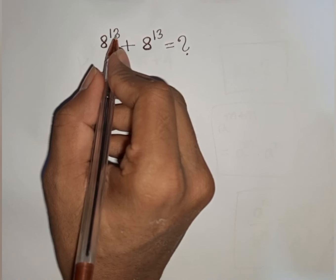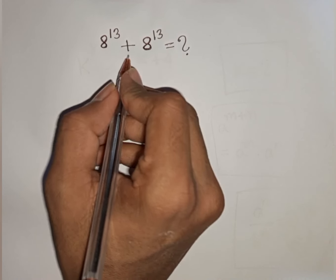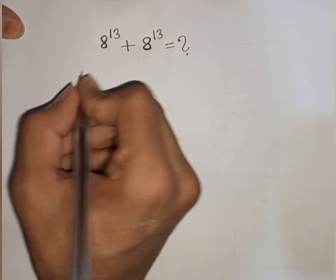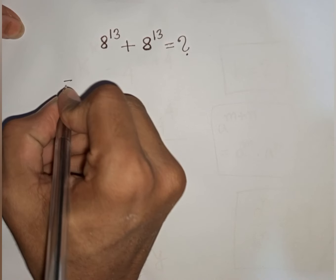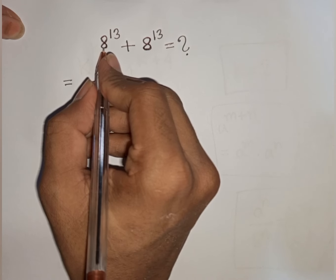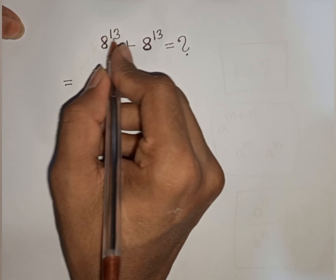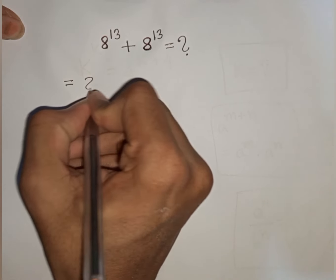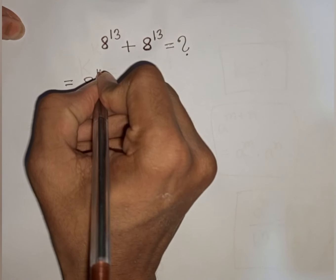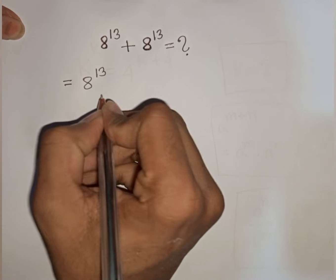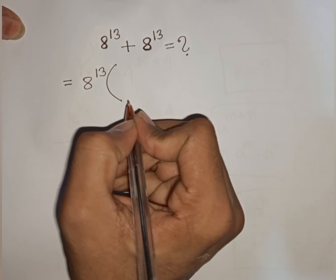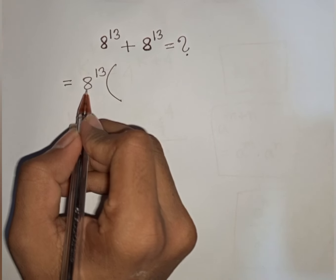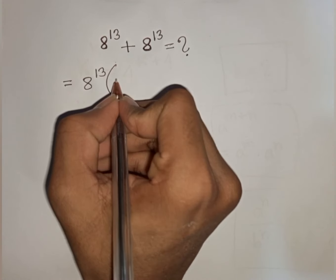How to simplify 8 power 13 plus 8 power 13? So, we take common factor 8 power 13. So, 8 power 13 is factored out of the bracket — this divided by this.